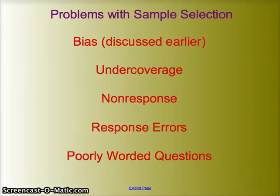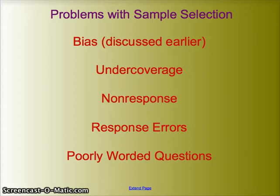Here they are: bias, under-coverage, non-response, response errors, poorly worded questions. In fact, the four errors starting with under-coverage all create bias. And remember, bias is systematically favoring a certain outcome.